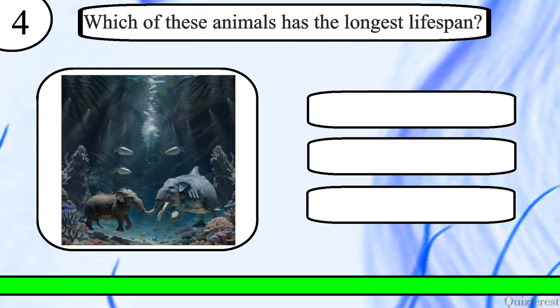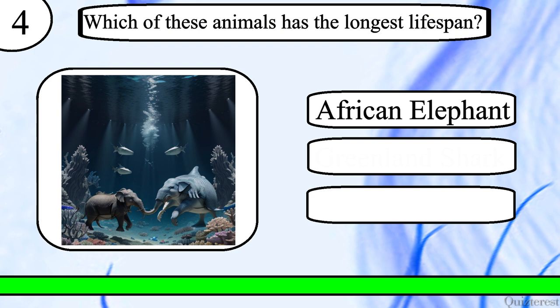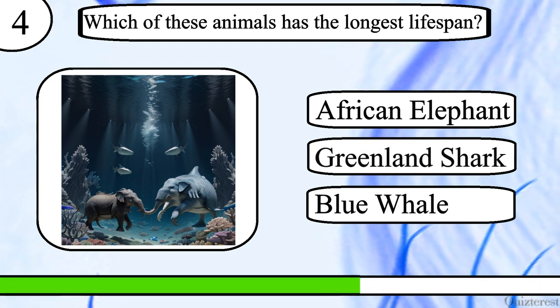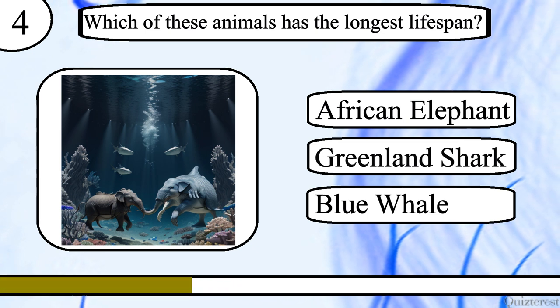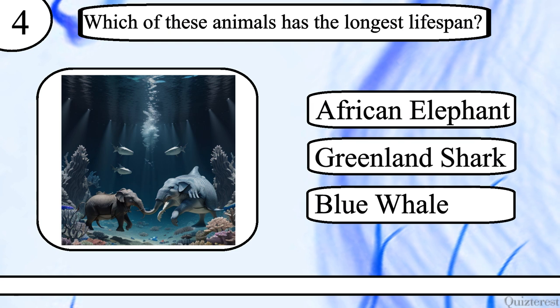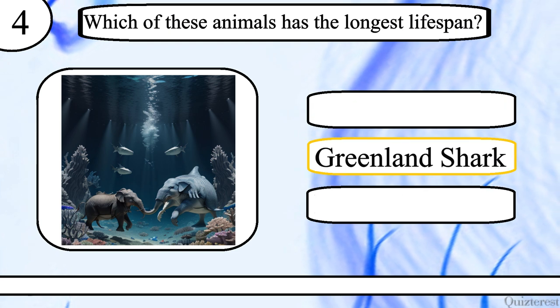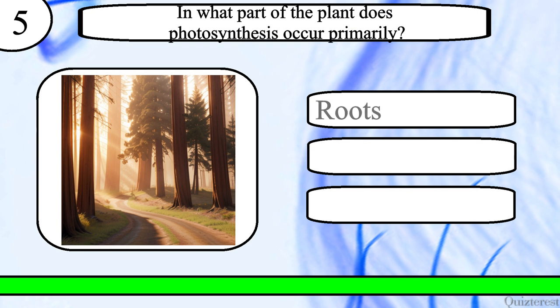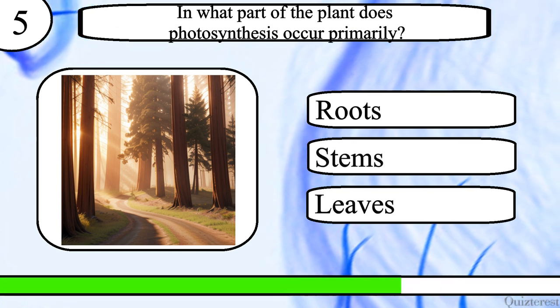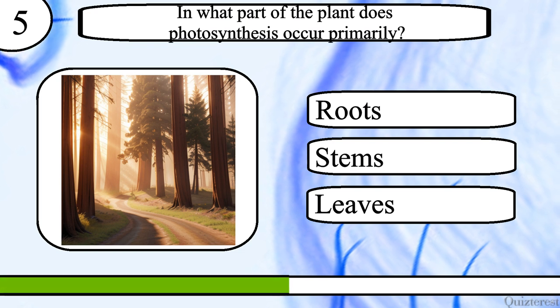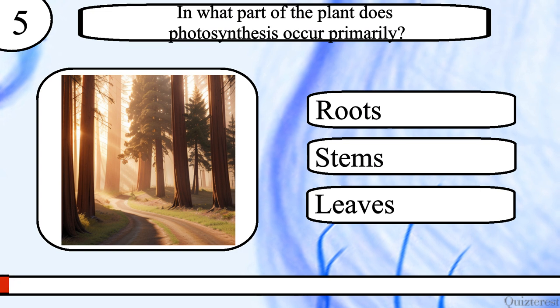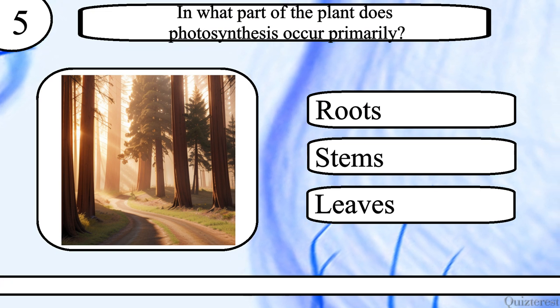Question 4. Which of these animals has the longest lifespan? African elephant, Greenland shark or blue whale? The correct answer is Greenland shark. Question 5. In what part of the plant does photosynthesis occur primarily? Roots, stems or leaves? The correct answer is leaves.